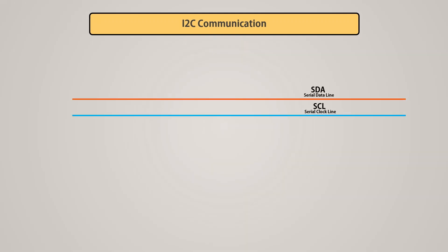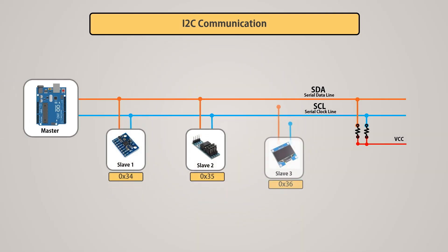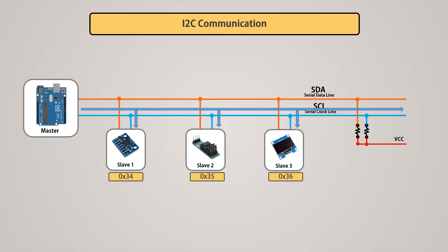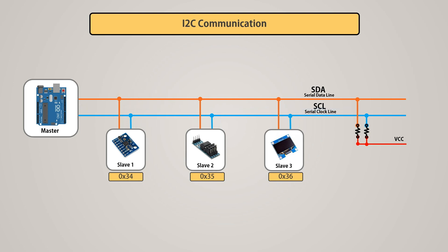The I2C communication protocol works through SDA (serial data) and SCL (serial clock). Initially, both the SDA and SCL lines are pulled high using a pull-up resistor. In this protocol, there are two types of devices: masters and slaves. The master device controls the communication and generates the clock signal that synchronizes the data transfer. The slave devices are connected to the bus and respond to the commands of the master. The master can send or receive data to or from the slave by transmitting a series of bytes over the SDA line, while the SCL line is used to synchronize the data transfer.